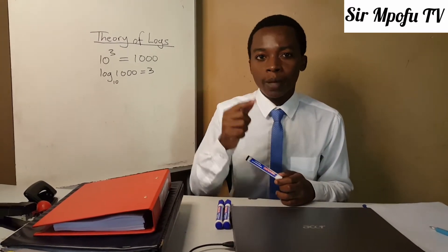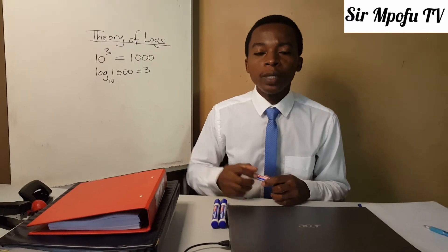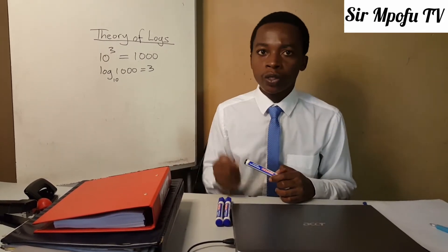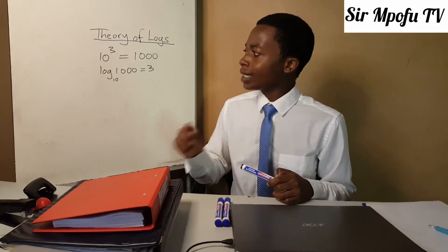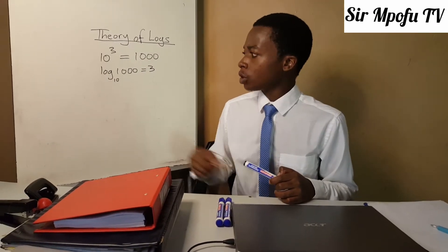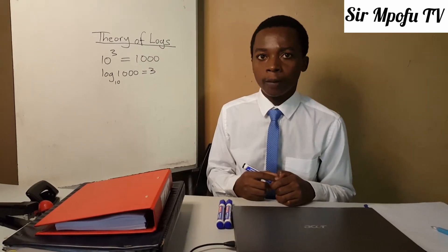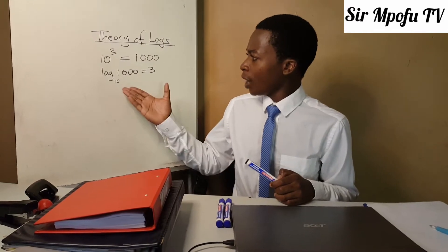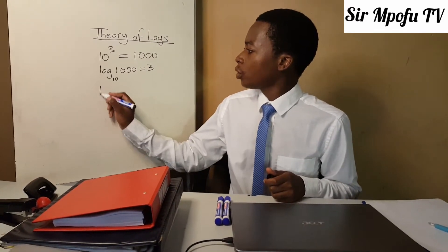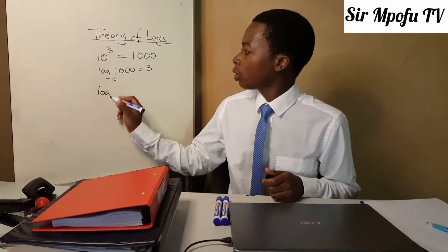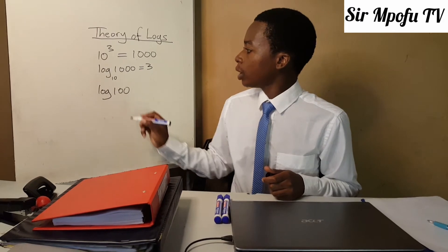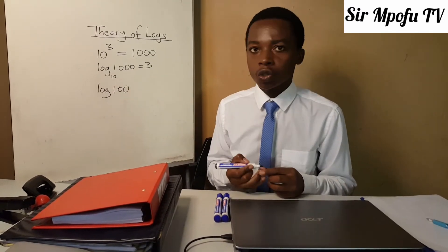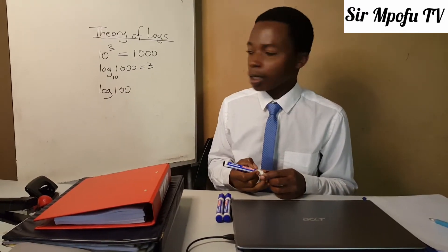I want you to understand that your calculator is in base 10, so anything — any log in base 10 — you can prove it with your calculator. If you punch log 1000 on your calculator, you are going to see that your answer is 3. So how do you calculate it? For instance, if they ask you to find log 100, you must know that 10 to the power of something equals this value.